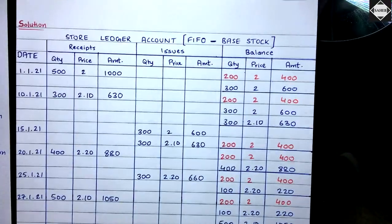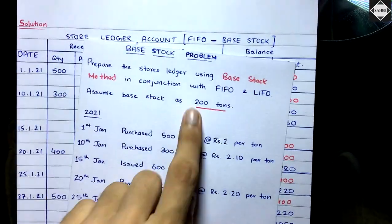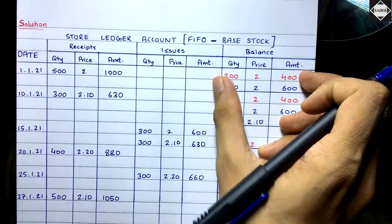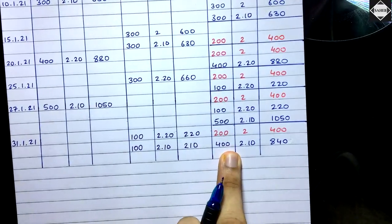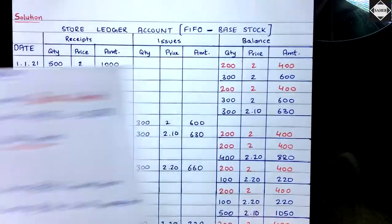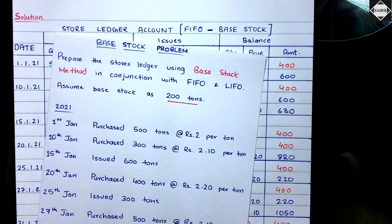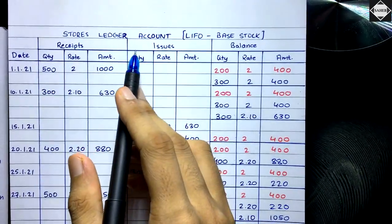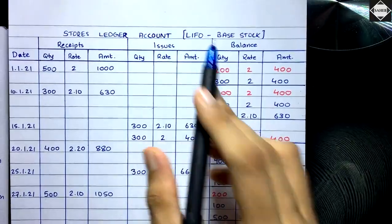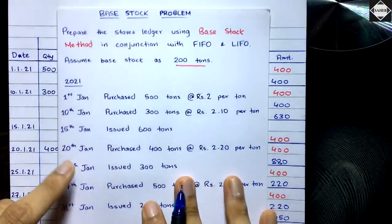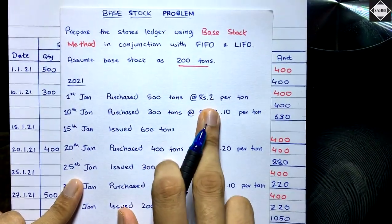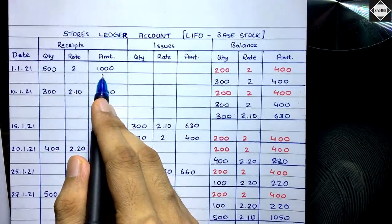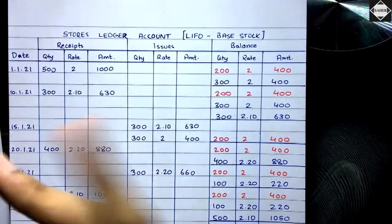This is how you do the base stock stores ledger — just keep that base stock lot constant. If the question said 500 tons, you'd take 500 as the red ink and maintain it till the end. Now let's see how to do the LIFO version. For LIFO, on 1st January, purchase 500 tons at ₹2: receipt column 500 × ₹2 = ₹1,000.